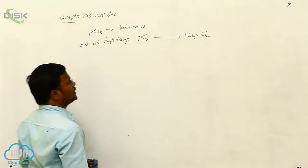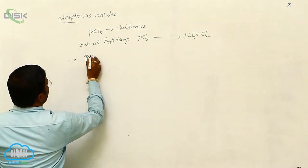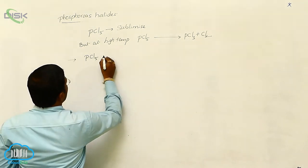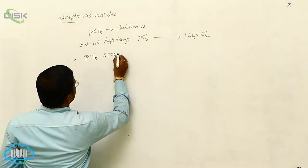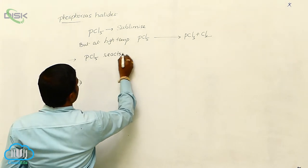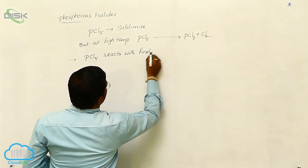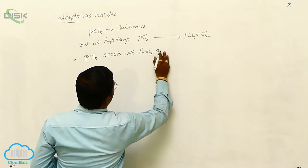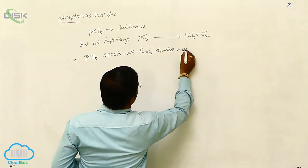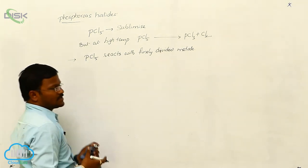Similarly, phosphorus pentachloride PCl5 reacts with finely divided metals and produces their respective changes.